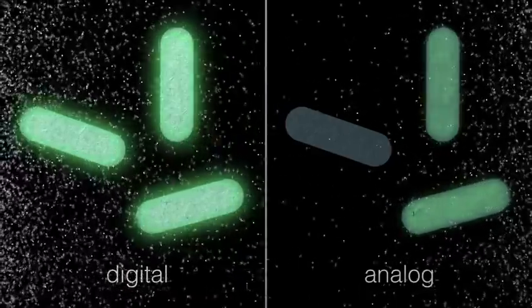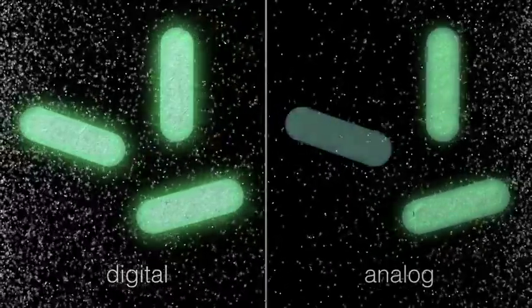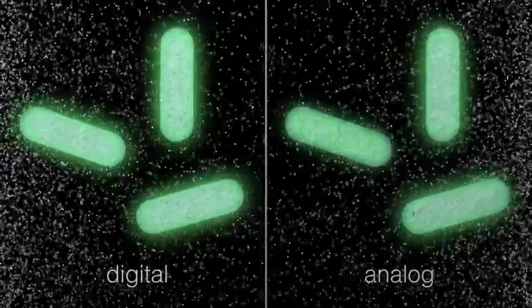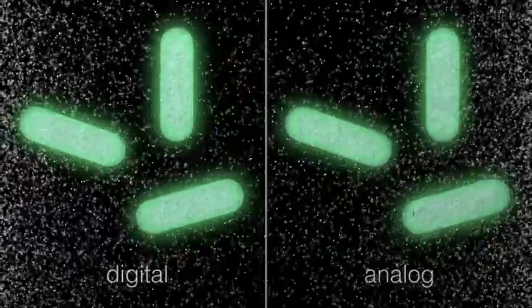In contrast, a cell with an analog circuit could respond dynamically to continuous concentrations of the small molecule, changing its output depending on the concentration of the small molecule.